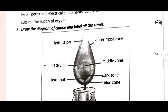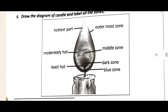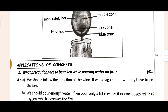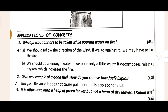The sixth question is: draw a diagram of a candle flame and label all the zones. This is very important — there is a high chance it will come in your final exam, so remember this one. After that, come to the 'Application of Concept' section.